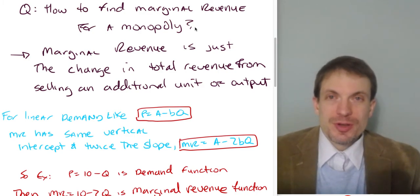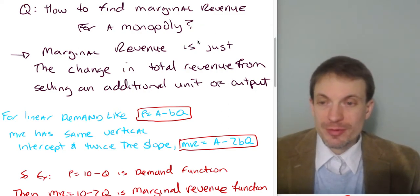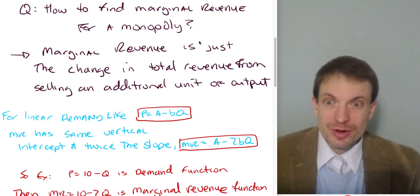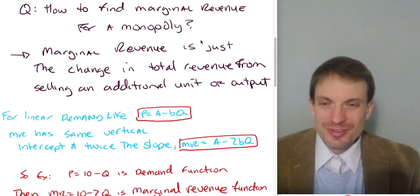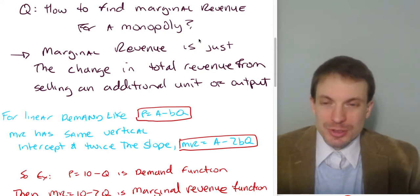For a downward sloping demand curve, the reason why is a downward sloping demand curve is because the monopoly is facing the entire market demand for which the law of demand should hold. Meaning, if we sell an additional unit, the price for that unit and for all previous units has to fall. So marginal revenue is generally going to lie below the demand curve.